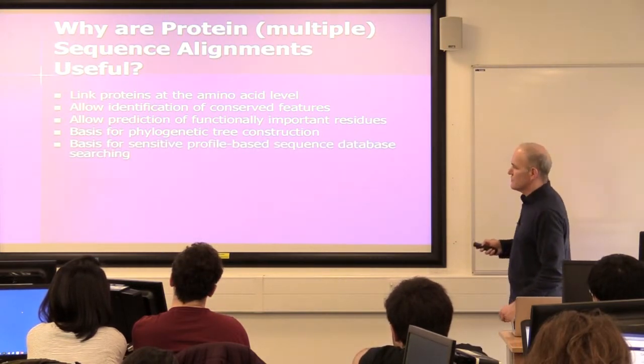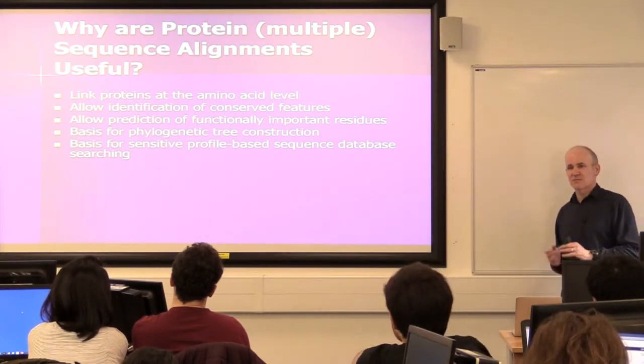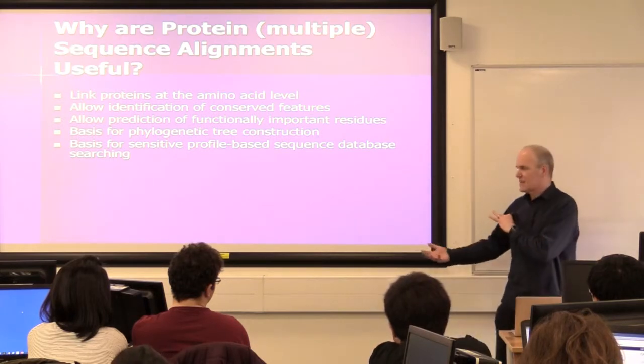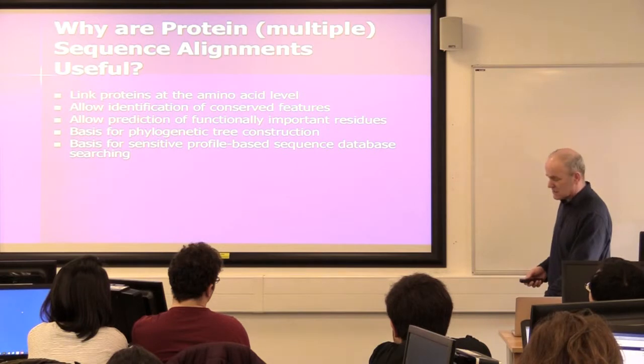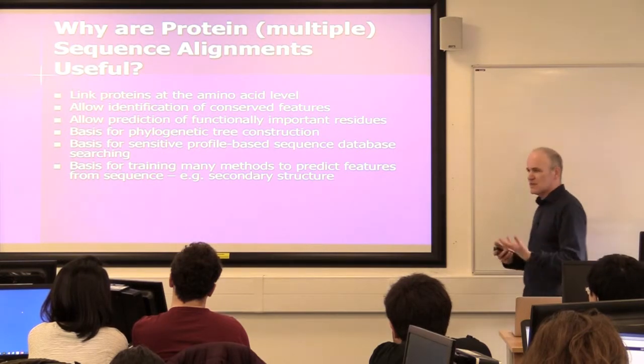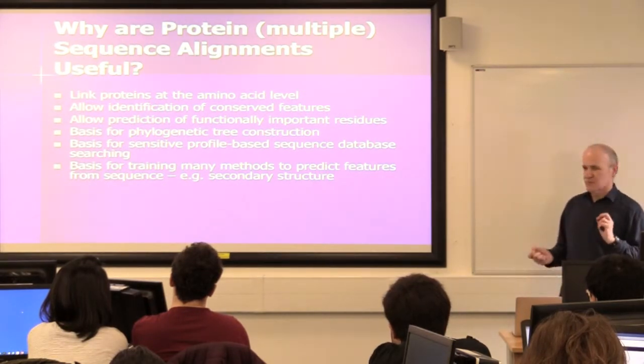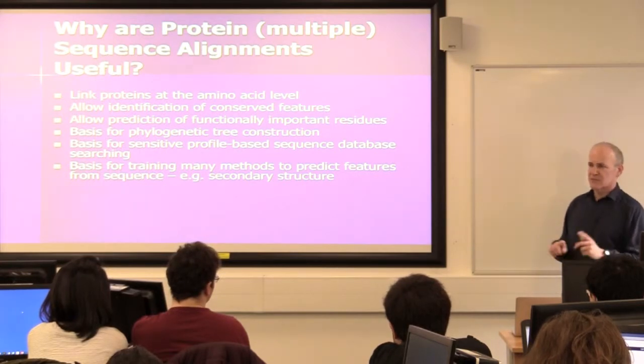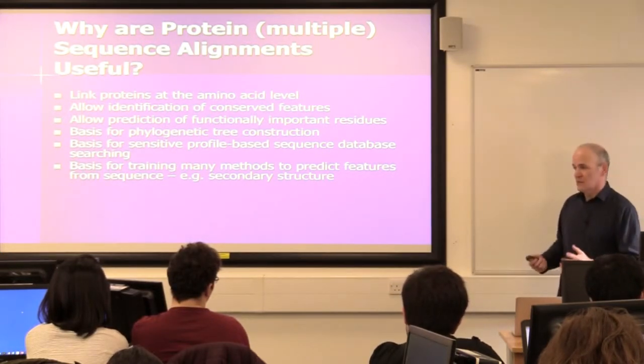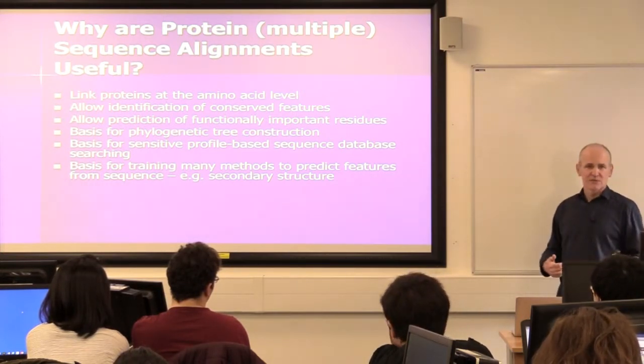I'm not really going to cover it. I will talk about profiles in a minute. But I'm not going to talk in detail about profile searching. But multiple alignments are the basis for the most sensitive database searching methods. So PSI-BLAST is one of these. You build a profile, you search with that rather than a single sequence. And there are others. Multiple alignments are also the basis for training all kinds of methods to predict different features and properties of protein sequences. So when you have a multiple alignment, you can get much more accuracy from different prediction methods than from a single sequence. And we're going to do a lot on secondary structure in this course.